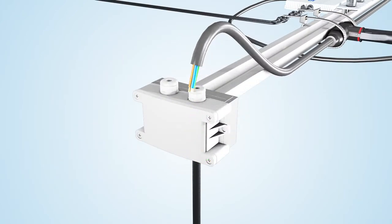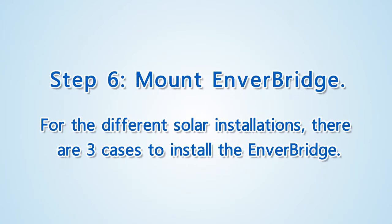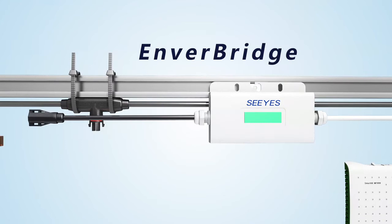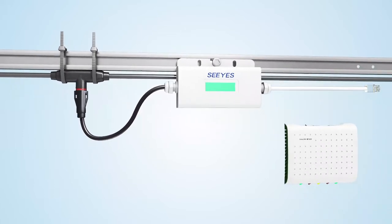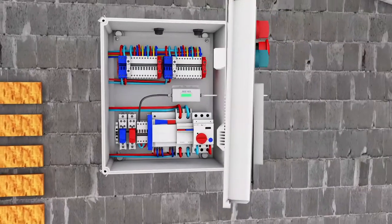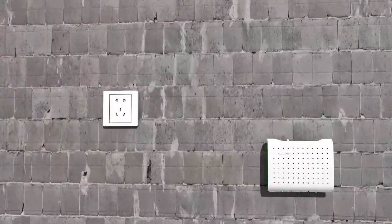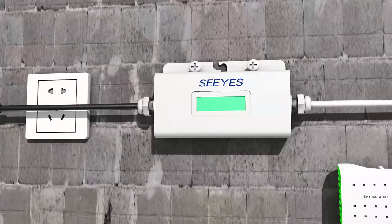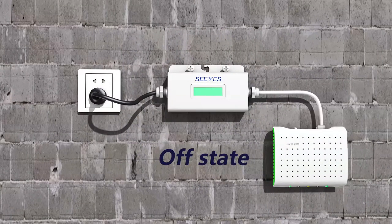Step 5: Connect the trunk cable to the junction box. Step 6: Mount the Enverbridge. For different solar installations, there are three cases. Case 1: Fix the Enverbridge on the rack near the junction box. Case 2: Fix the Enverbridge in the house distribution box. Case 3: Fix the Enverbridge on the wall near the wall plug. Please note that the breaker in the distribution panel for the PV system must be kept off until the whole system is completed.